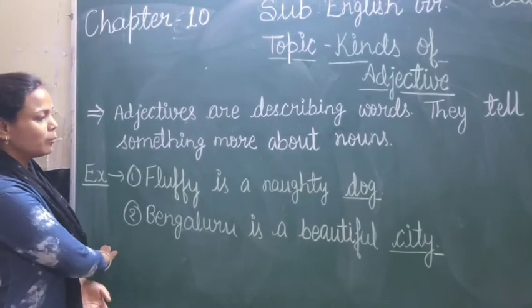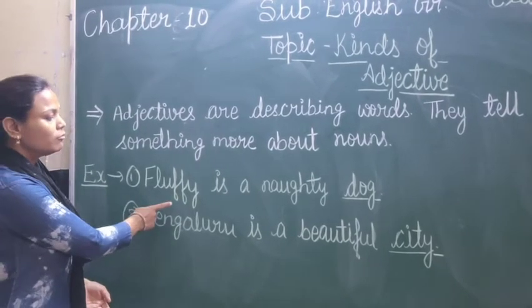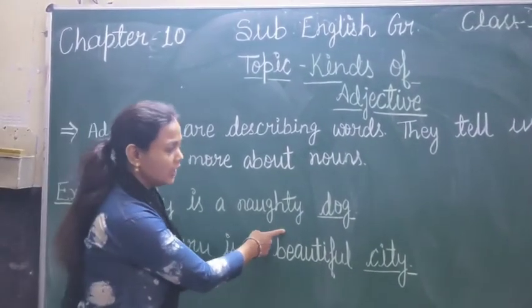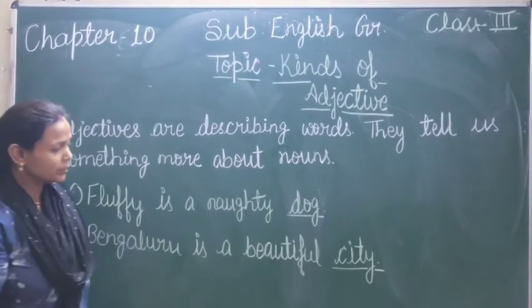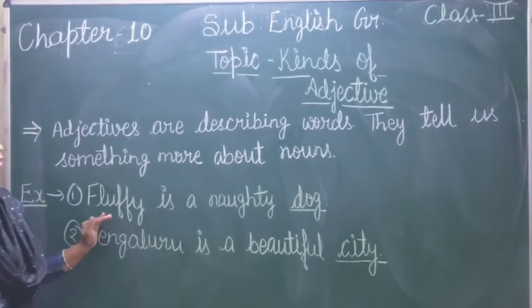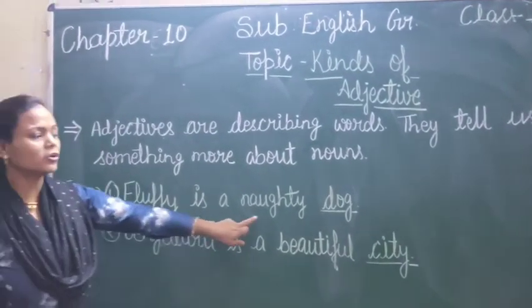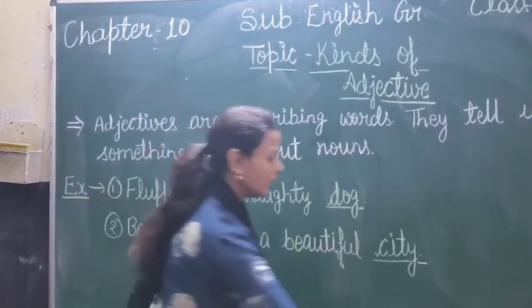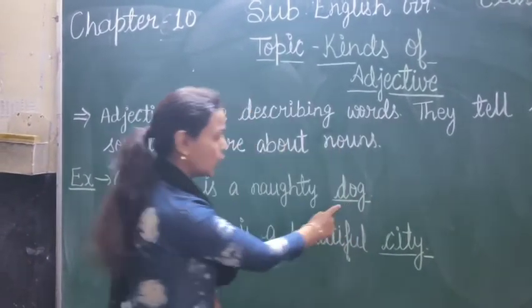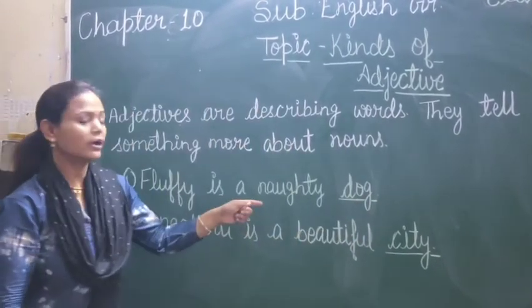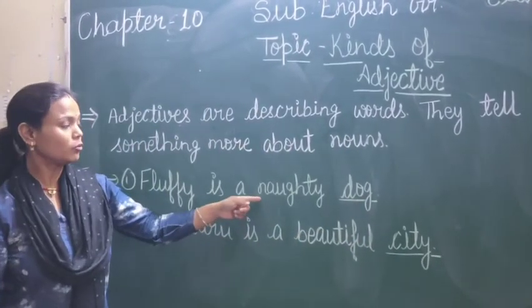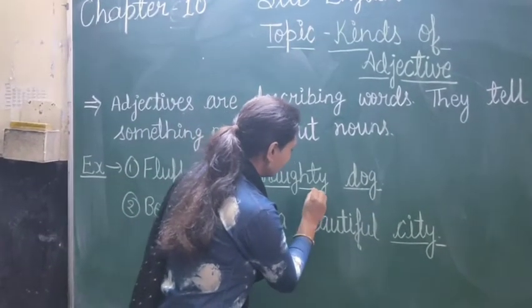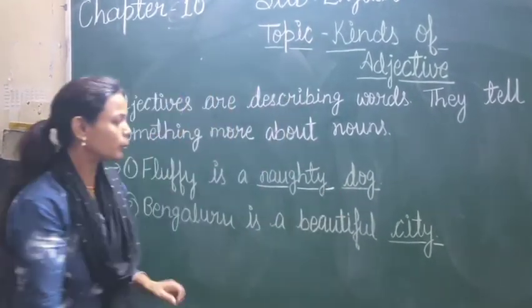Like, example dekhiye: 'Fluffy is a naughty dog.' Ismein dekhiye — Fluffy kya hai? Naughty dog hai. Dog kya hai? Dog ismein noun hai. Adjective kya hota hai? Adjective hota hai — naughty.